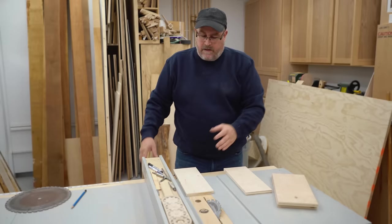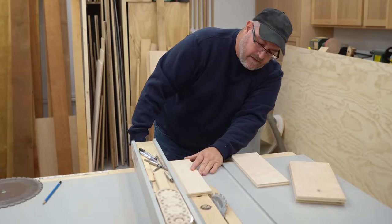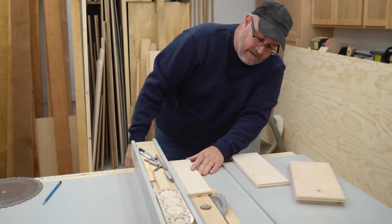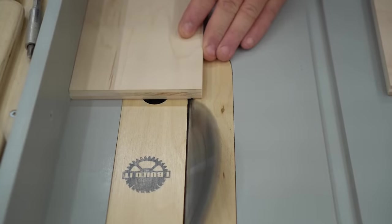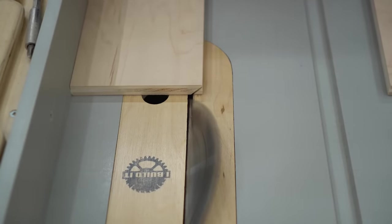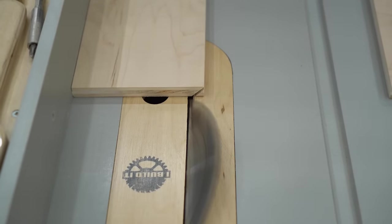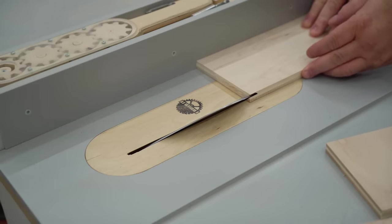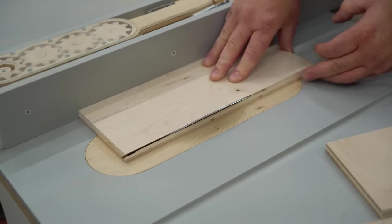And I'm going to do that by eye. I just like to take the work, slide it into the blade, line it up, like line up the corner of that square cut with the edge of the blade, and then lock the fence. And then I can turn on the saw and make a partial cut to see exactly where that lines up. Then I can finish the cut by running it all the way through. And then I'll do the other piece to the other side as well.